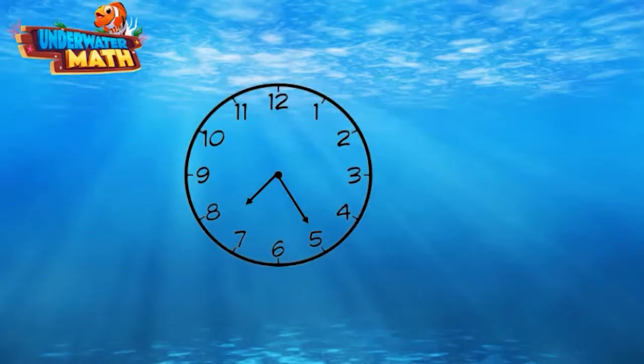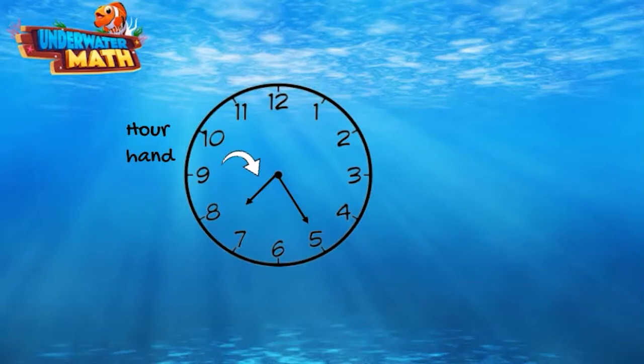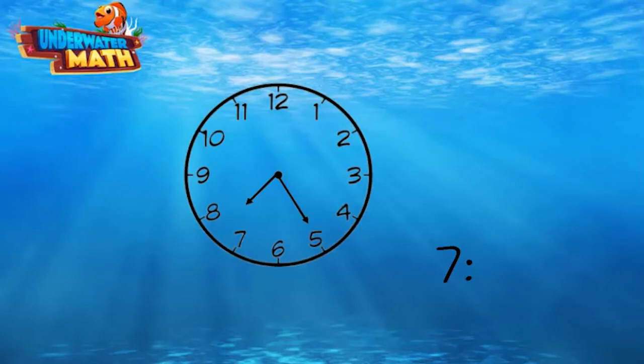First, we need to get familiar with the clock. Time is told in both hours and minutes. The short hand is called the hour hand, and this one is between 7 and 8, which means it is past 7 o'clock, but not yet 8.